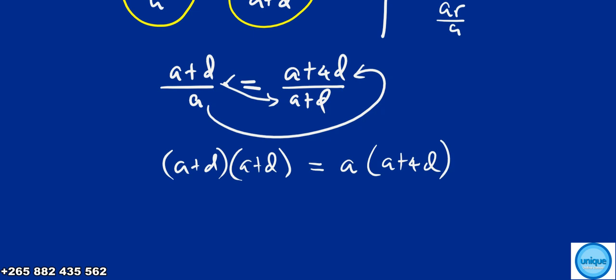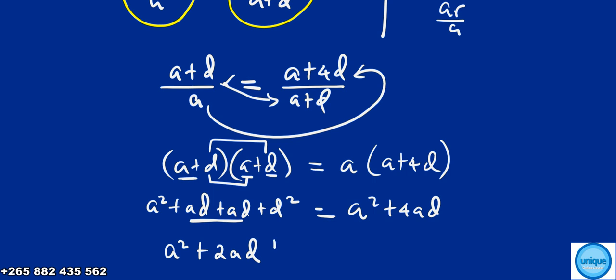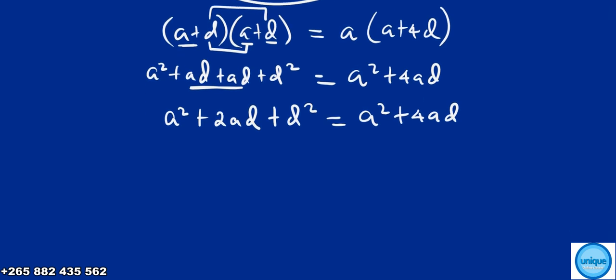Let's multiply it out and remove the brackets. a times a is a squared, a times d is ad, d times a is ad, and d times d is d squared. So we have a squared plus 2ad plus d squared equals a squared plus 4ad.